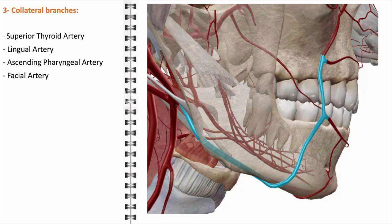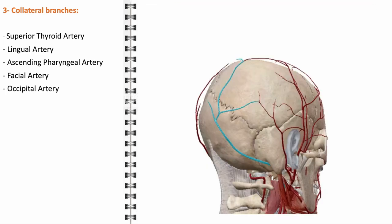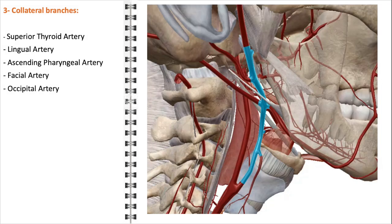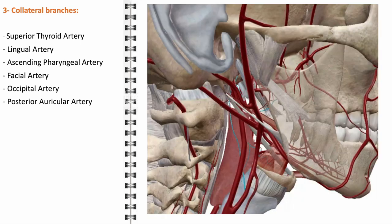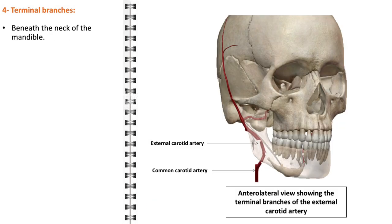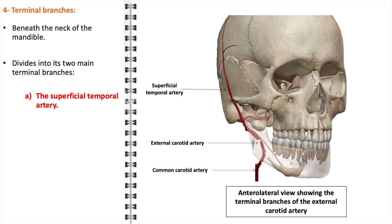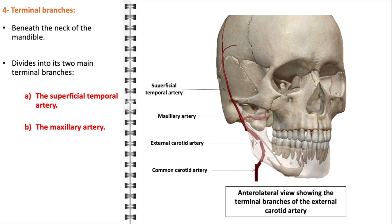The occipital artery runs posteriorly and supplies blood to the scalp's occipital region, upper neck muscles, and portions of the ear and meninges. The posterior auricular artery, ascending behind the ear, supplies the auricle, the scalp over the mastoid process, and part of the external acoustic meatus. Beneath the neck of the mandible, the external carotid artery divides into its two main terminal branches: the superficial temporal artery and the maxillary artery, one of the largest branches of the external carotid artery.